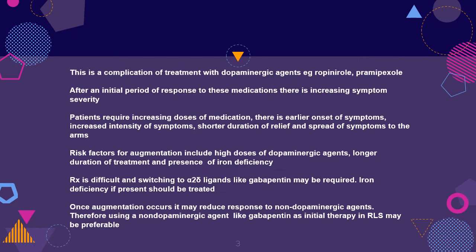Treatment is difficult and switching to alpha-2-delta ligands like gabapentin may be required. Iron deficiency, if present, should be treated. Once augmentation occurs, it may reduce response to non-dopaminergic agents. Therefore, using a non-dopaminergic agent like gabapentin as initial therapy in RLS may be preferable.